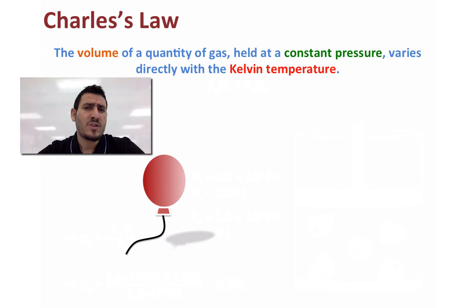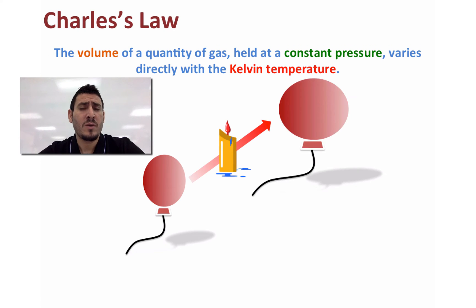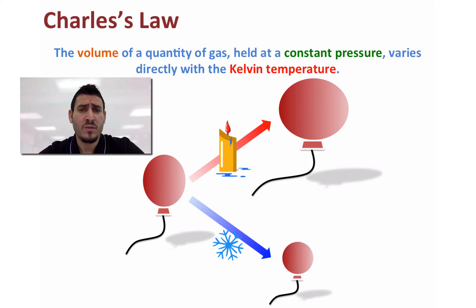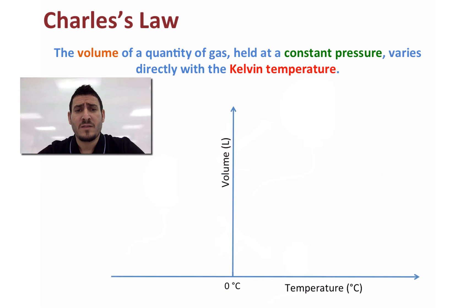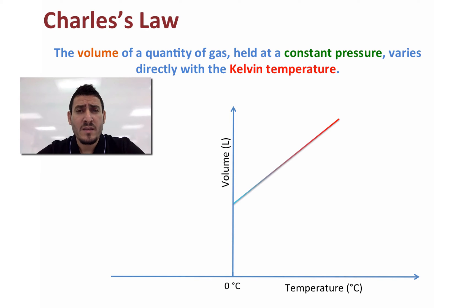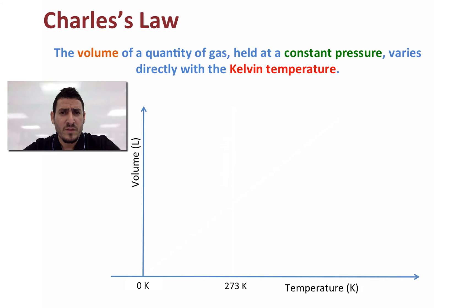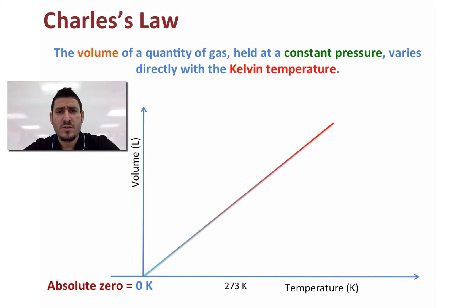Charles' law states that the volume of a quantity of gas held at constant pressure varies directly with the Kelvin temperature. If we heat a balloon, its volume increases; if we cool it, the volume decreases. This gives a straight line for a direct relationship between volume and temperature. When Charles extrapolated this line to find the temperature when volume equals zero, he found minus 273 degrees Celsius, or zero Kelvin — absolute zero.